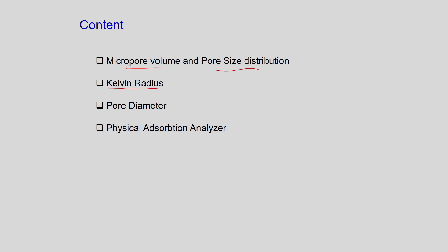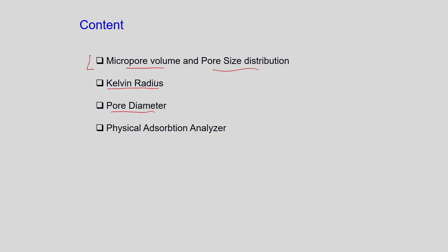The Kelvin radius is a very important concept — its significance in terms of bulk condensation will be explained in detail. These results are obtained as direct measurements of the BET isotherms. The instrument gives us the amount adsorbed at a certain reduced pressure, and from there you can measure micropore volume, pore size distribution, and Kelvin radius. Pore diameter is also a direct outcome of the BET instrument measurements. Finally, we will see a physical adsorption volumetric adsorption analyzer.